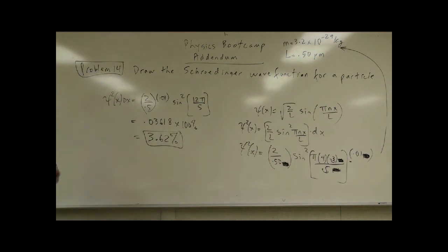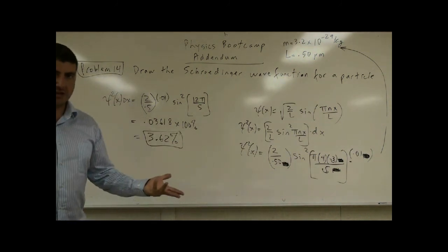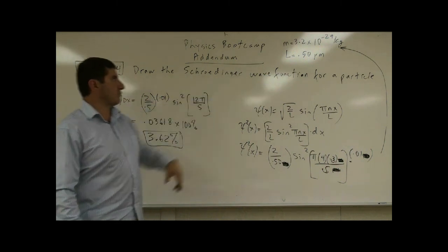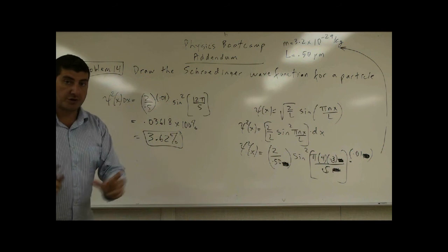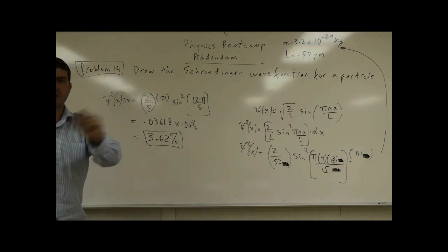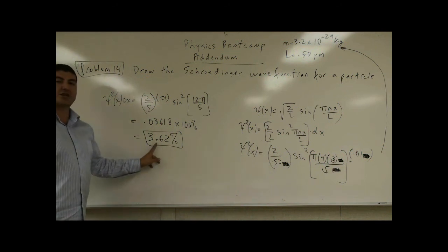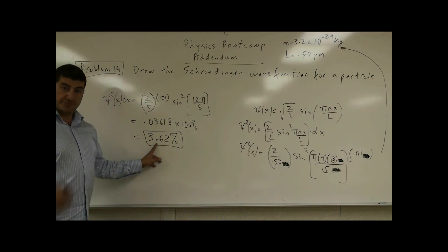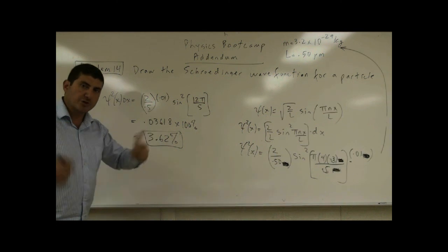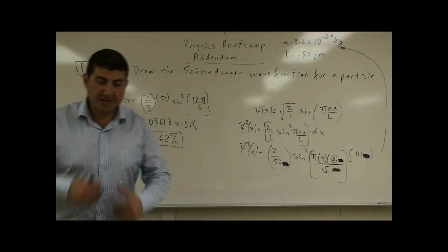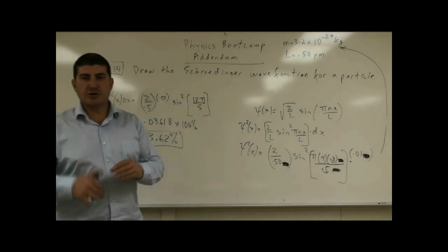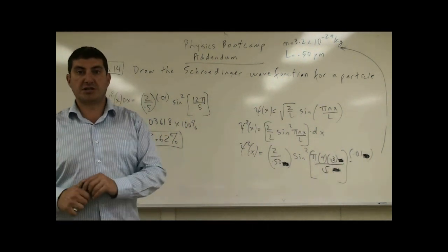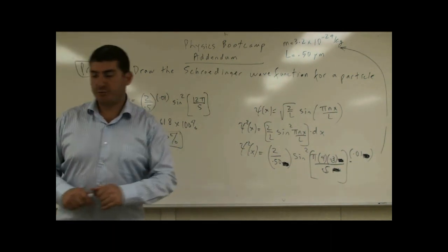In the n equals 4 state with a box of 0.5 micrometers, there is about a 3% probability of finding the particle at x equal to 0.3 micrometers with an uncertainty of 0.01. This is a good introduction to quantum mechanics — you can see how to apply it to a basic particle-in-a-box problem. Thank you very much.